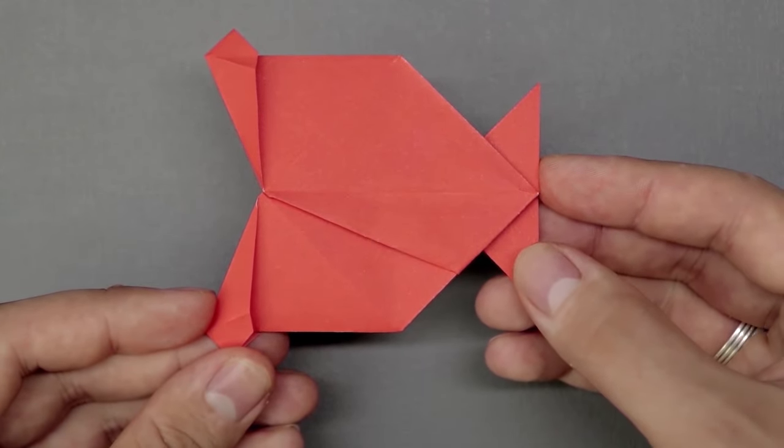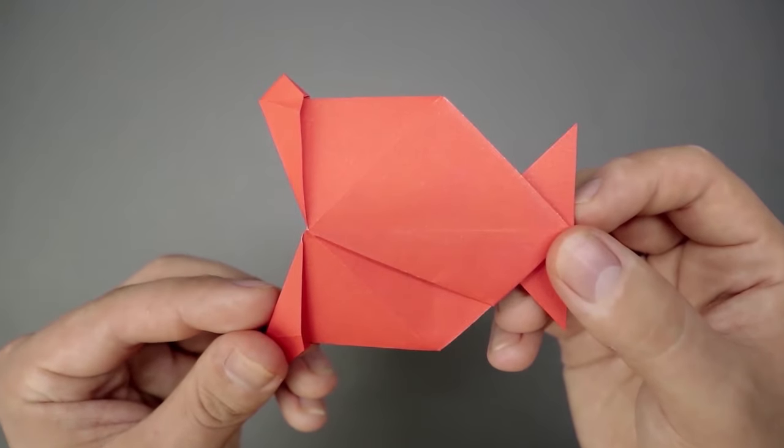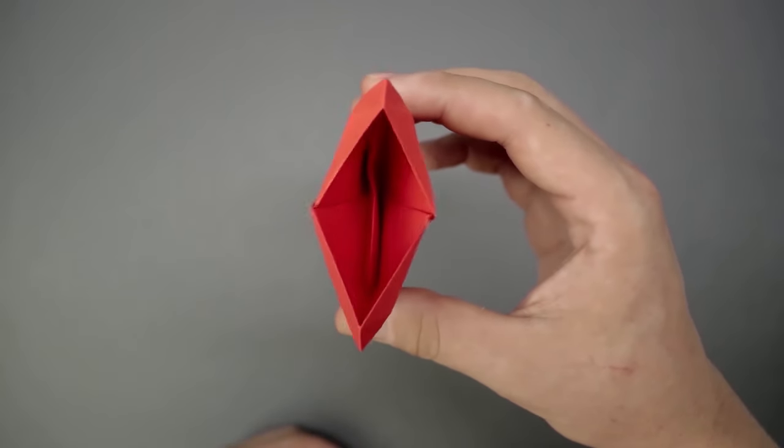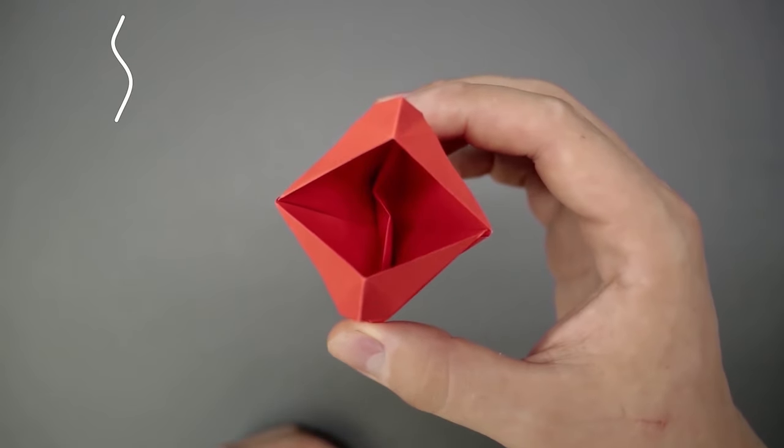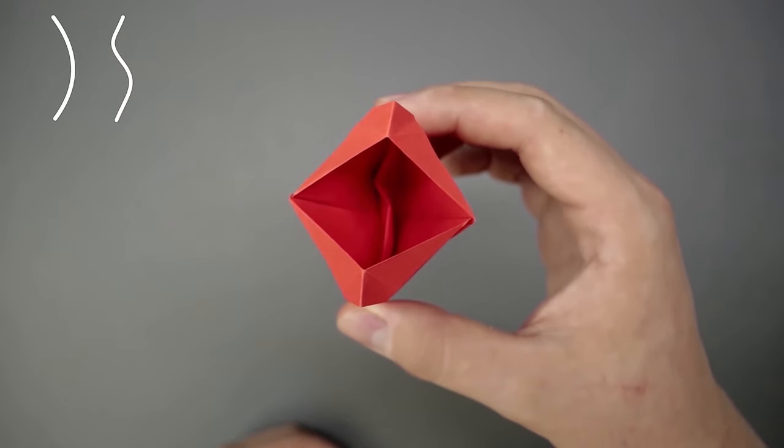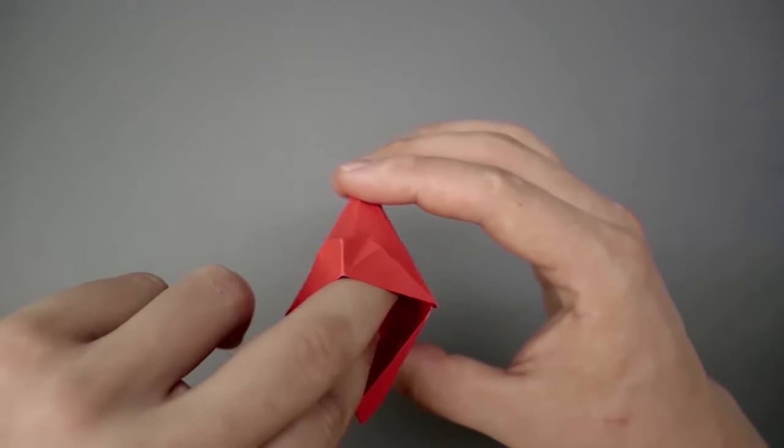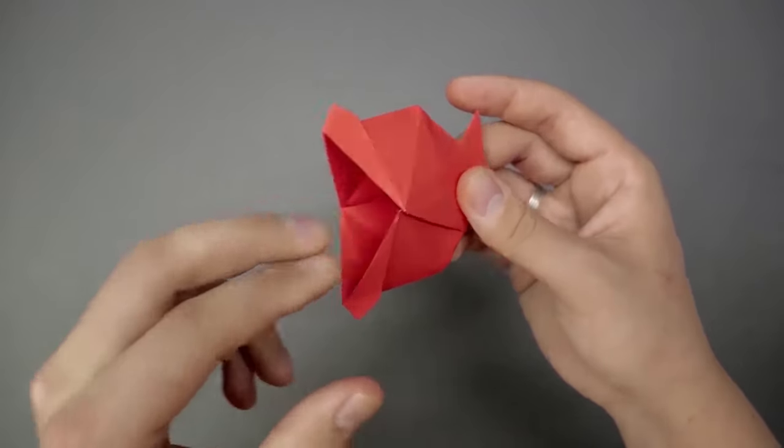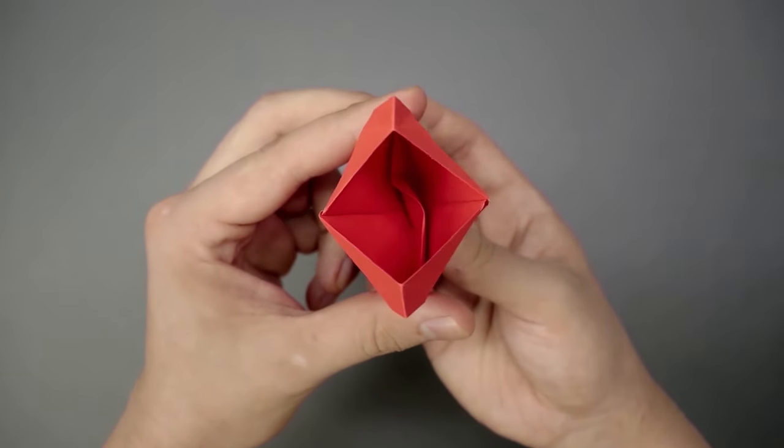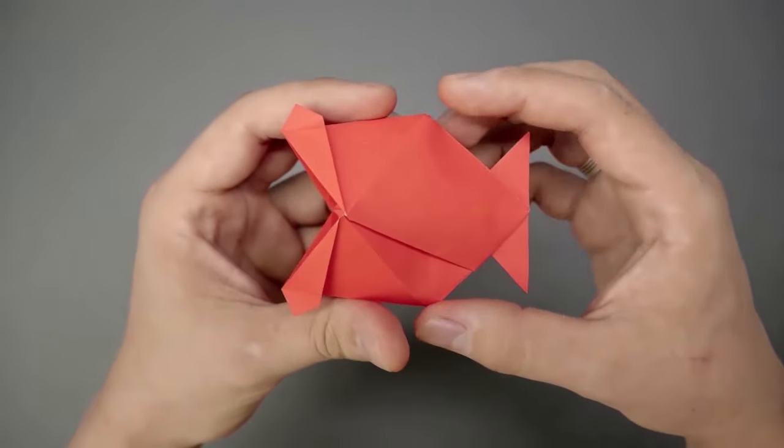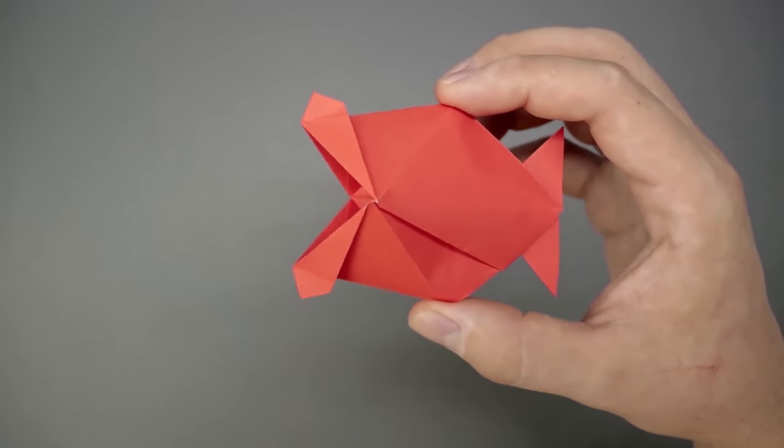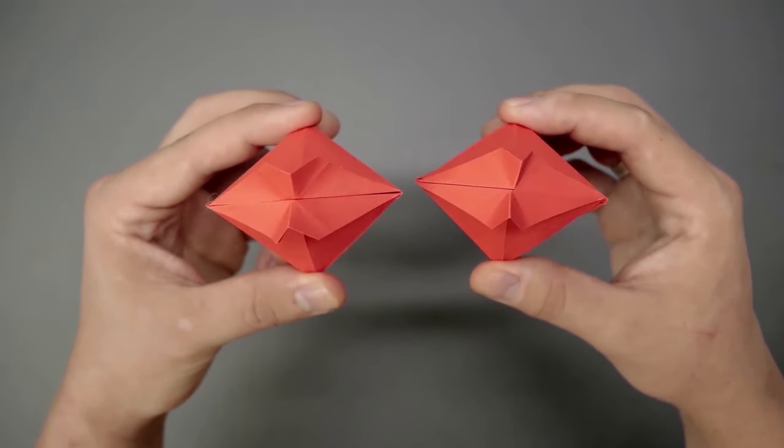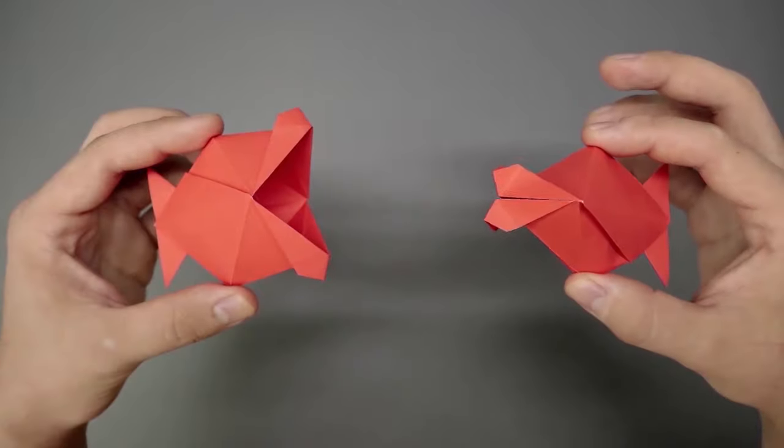Now the origami is almost ready, but to make the mouth close properly you need to bend the paper that is inside. You can make something like a letter S or simply bend to the side. As you can see, now the mouth closes much more easily. Here's another example that I made just by bending the paper to the side. The result is almost the same.